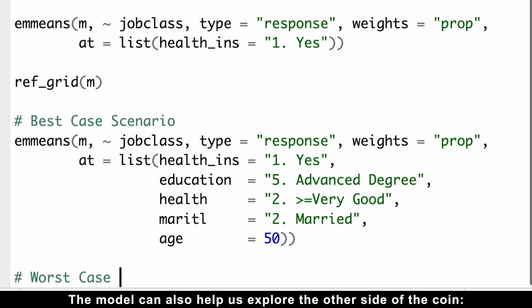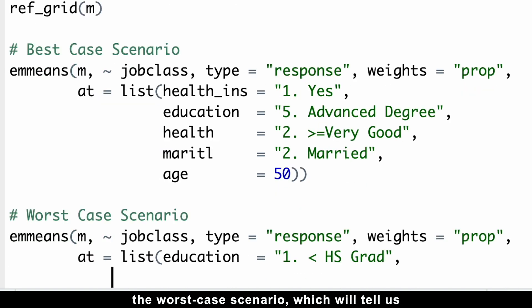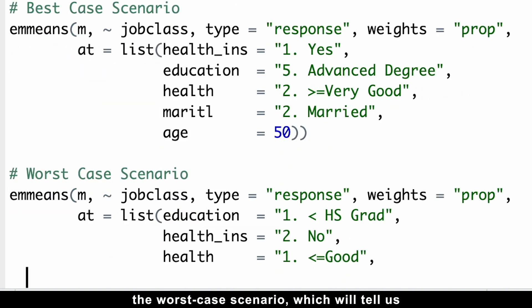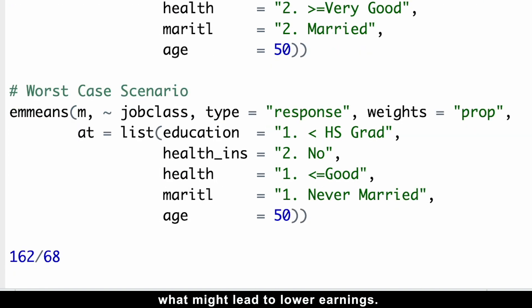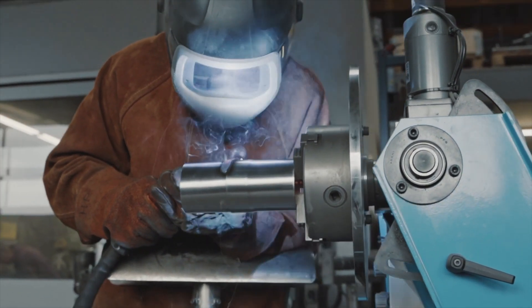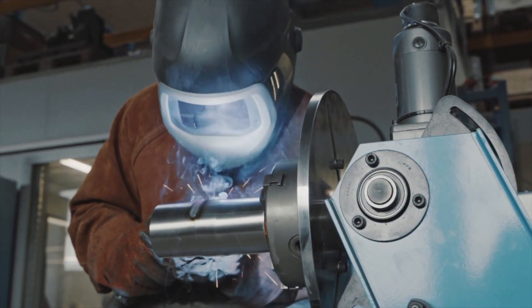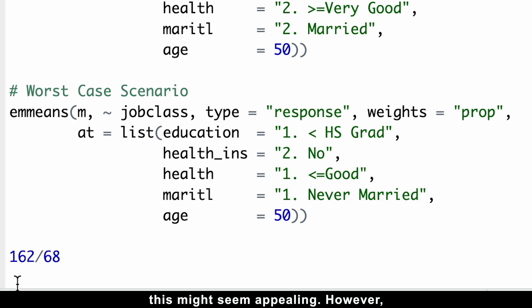The model can also help us to explore the other side of the coin, the worst case scenario, which will tell us what might lead to lower earnings. Imagine starting work in a factory for a quick paycheck. Since factories often don't require a high level of education upfront, this might seem appealing. However, this path could also mean staying in a job that doesn't require further education.